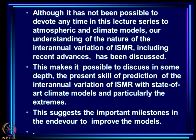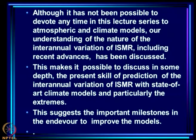Although it has not been possible to devote time in this lecture series to atmospheric and climate models, our understanding of inter-annual variation of ISMR including recent advances has been discussed in some detail. It is now possible to discuss in depth the present skill of prediction of inter-annual variation of ISMR with state-of-the-art climate models, particularly prediction of extremes — droughts and excess rainfall seasons. This analysis also suggests important milestones to be crossed to improve the models for satisfactory monsoon prediction.